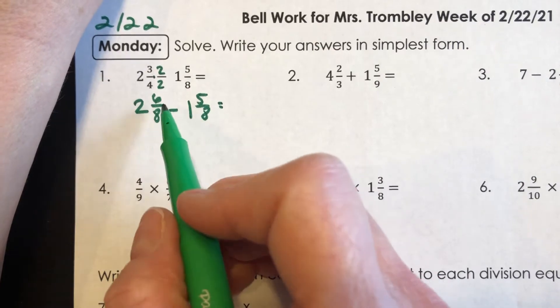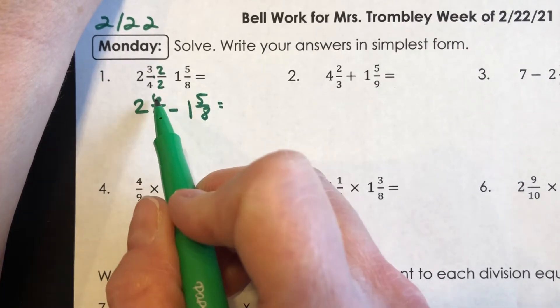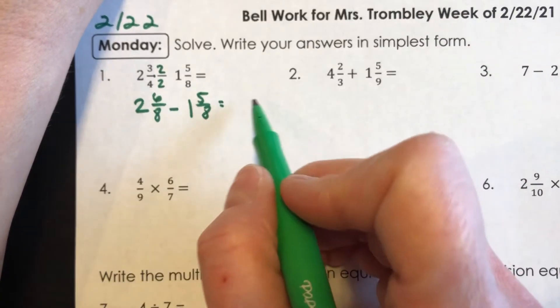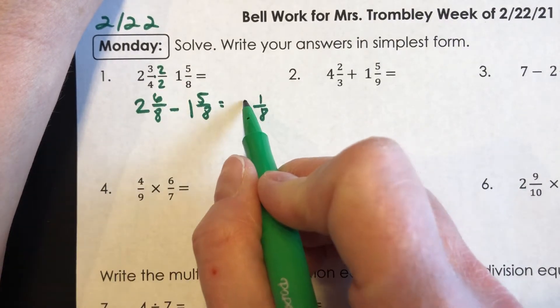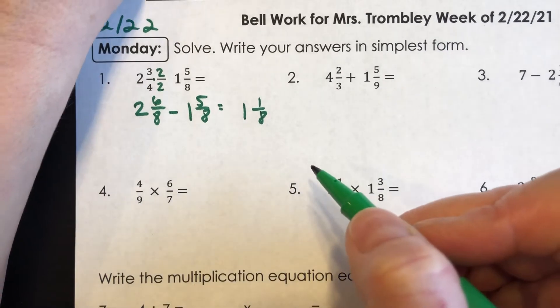So this would change to two and six-eighths minus one and five-eighths. And right off the bat, I'm like, yay, six-eighths minus five-eighths, I can subtract five from six. So when I do six-eighths minus five-eighths, that gives me one-eighth, and two minus one is one. So one and one-eighth is what you should have.